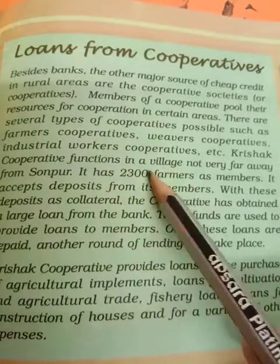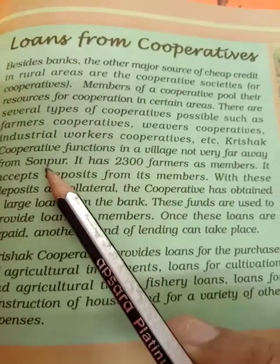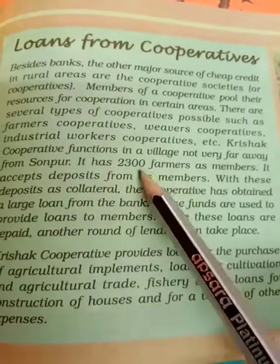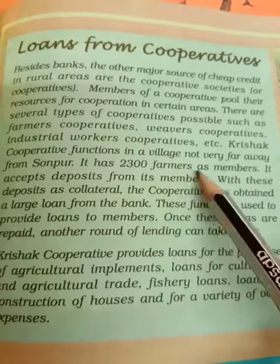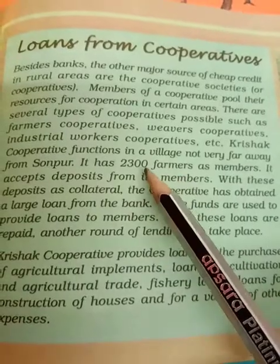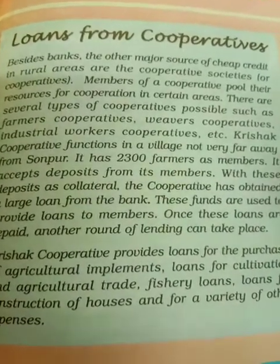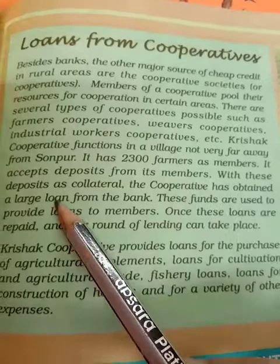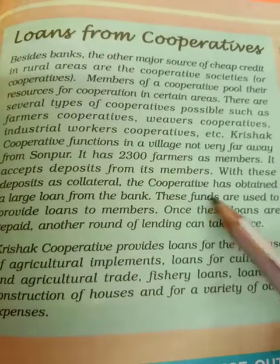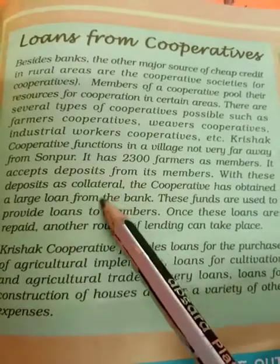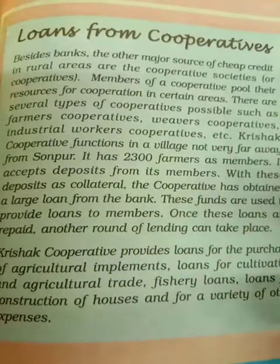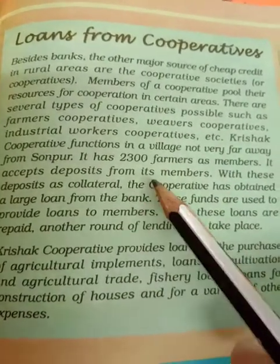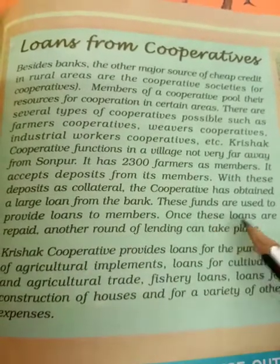The Krishak Cooperative functions in a village not far from Sonpur district. It has 2,300 farmers as members. It takes deposits from its members and with these deposits as collateral, the cooperative has obtained a large loan from the bank. These funds are used to provide loans to members. Once these loans are repaid, another round of lending can take place.